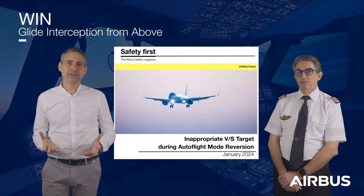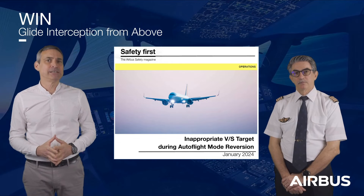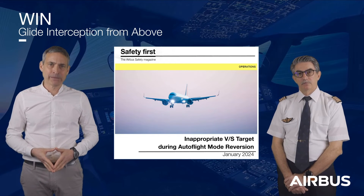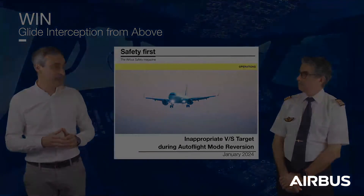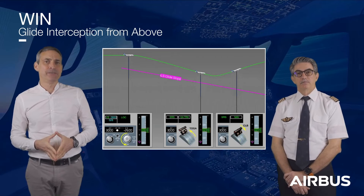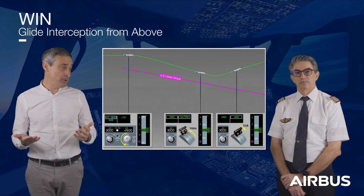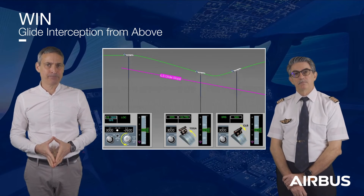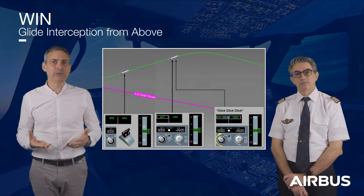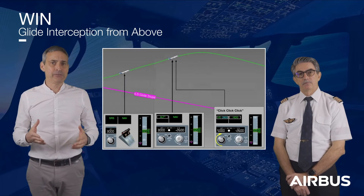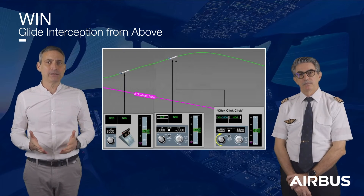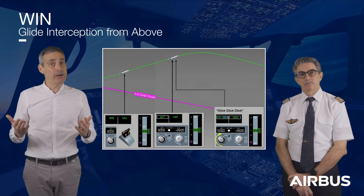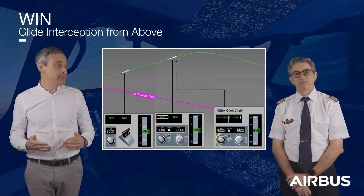Now let me focus on a specific scenario that occurred in service. This event is detailed in the Safety First article 'Inappropriate Vertical Speed Target During Autoflight Mode Reversion.' As illustrated in that article, an A320 was performing a glide interception from above. However, the approach was not stabilized and the flight crew decided to perform a go-around. The aircraft started to climb and reached the FCU selected altitude, and the ALT STAR mode engaged. At this moment, the pilot flying noticed the FCU altitude was not the published go-around altitude and changed the FCU to the correct higher altitude. This generated a reversion to a negative vertical speed target.